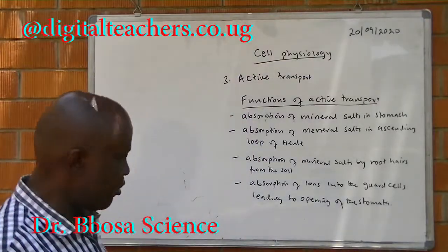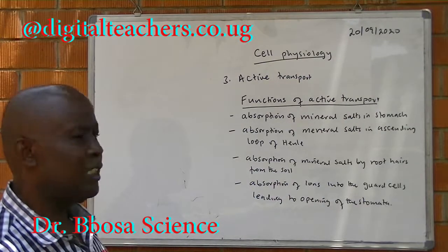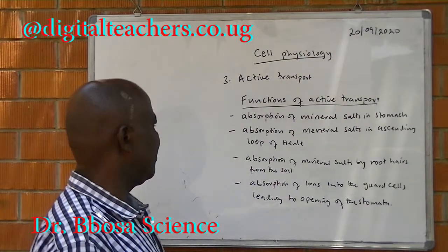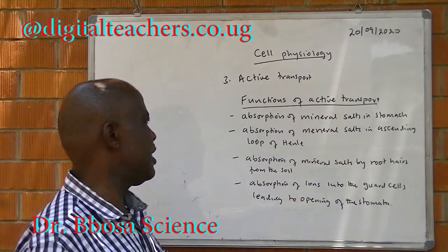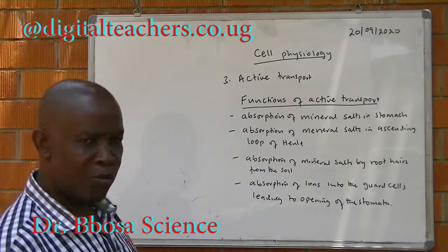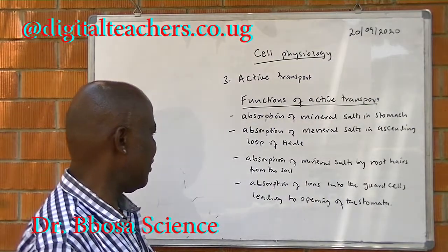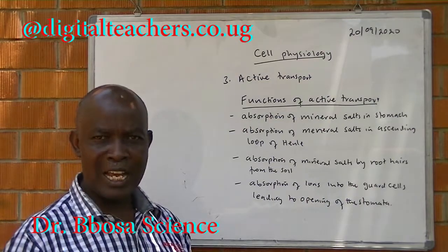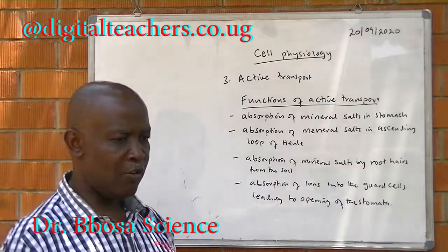Functions of active transport include: absorption of mineral salts and amino acids from the gut; absorption of mineral salts from the ascending loop of Henle; absorption of mineral salts from the soil by plant roots; and absorption of ions into the guard cells, which leads to opening of the stomata.